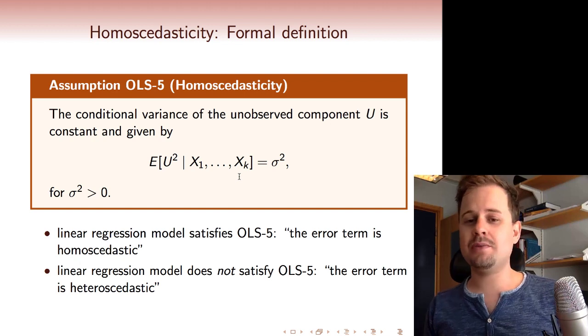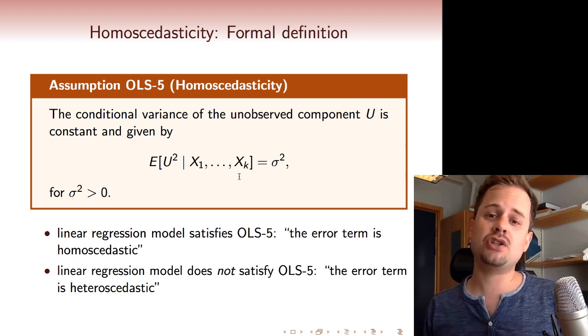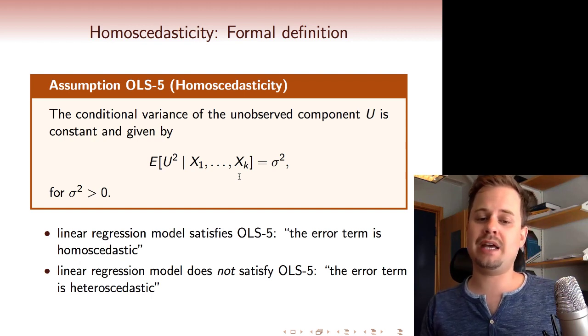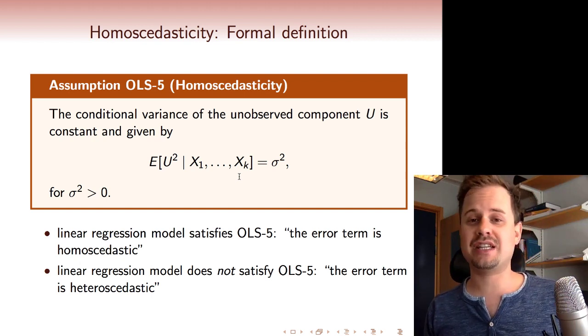And if a linear regression law does not satisfy the OLS5 assumption, then we say the error term is heteroscedastic. And typically in an applied setting, you don't want to assume homoscedasticity. So typically we assume that our error term is heteroscedastic.